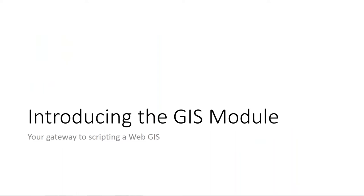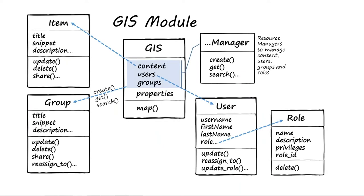Introducing the GIS module: this is your gateway into the scripting environment. It's basically a representation of your Web GIS — your portal, ArcGIS Enterprise, or ArcGIS Online. There's also a sub-module for ArcGIS Server, so you can directly connect and administrate ArcGIS Server — start and stop services, for example. Through the GIS module you access groups, users, roles, and items, and the search functionality on manager classes is a key feature for performing operations.